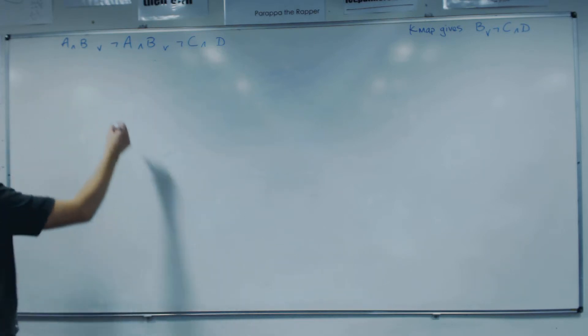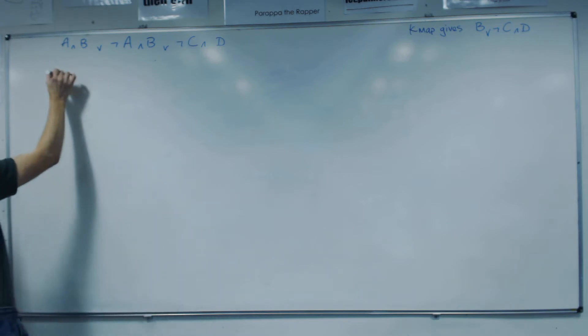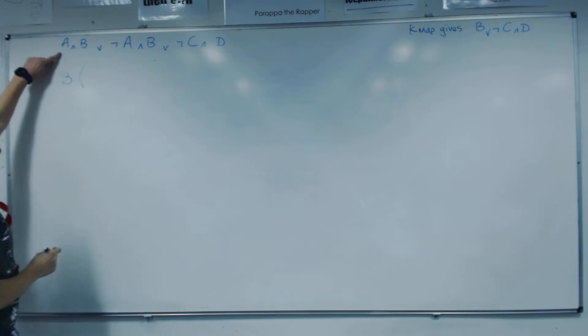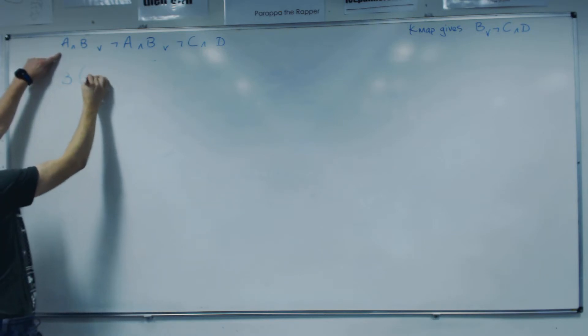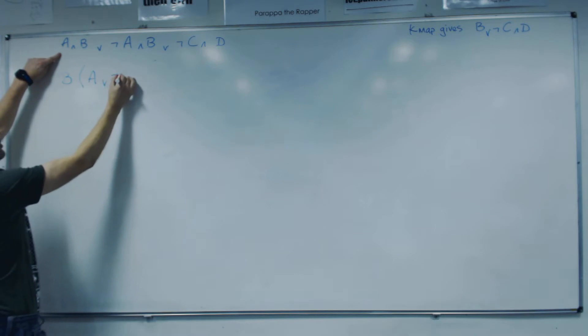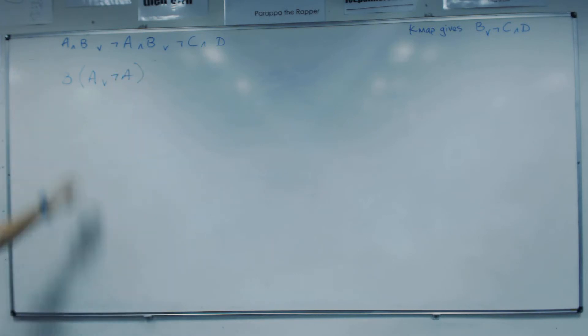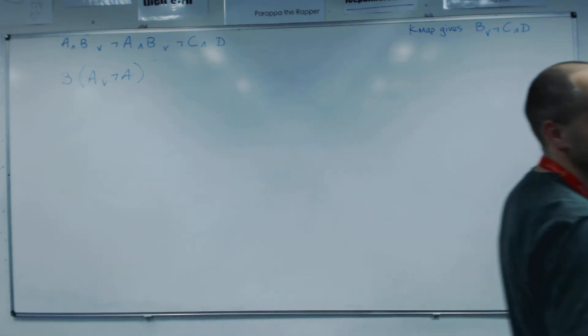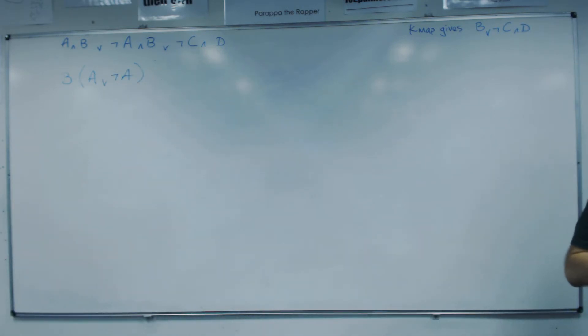Okay, so if I say, using distribution, if I pull the B out, I am left with A, A or not A. Now looking at your rule set, can that be reduced, can that be simplified? I've got an A or not A.